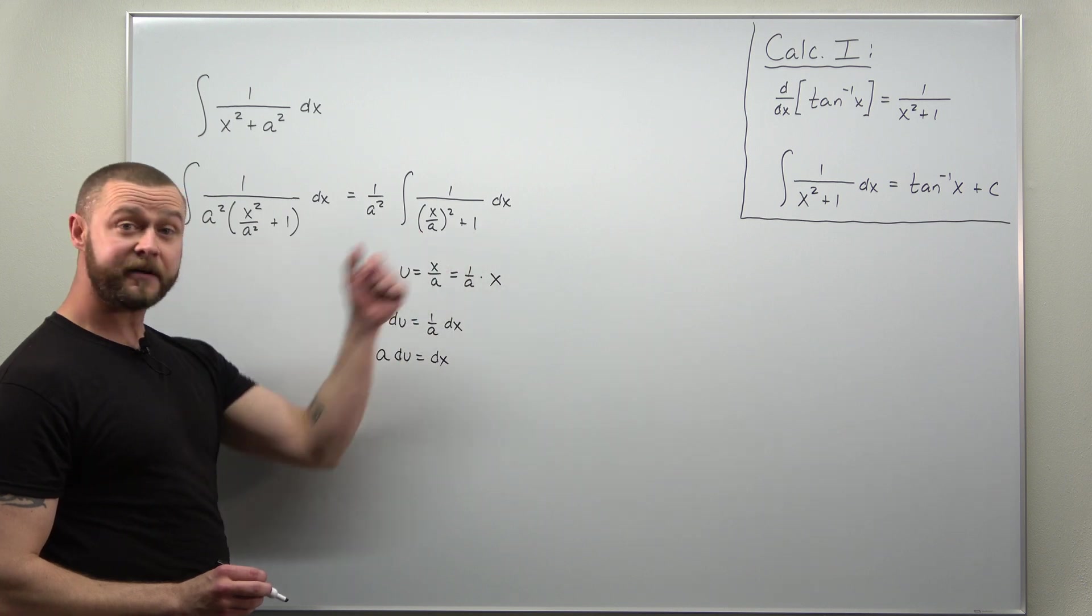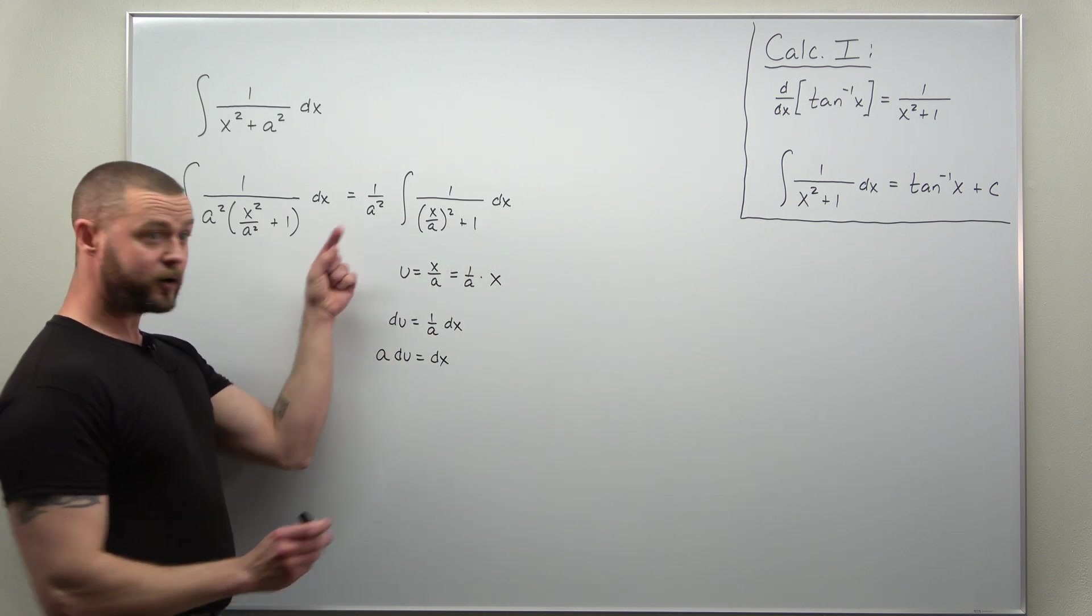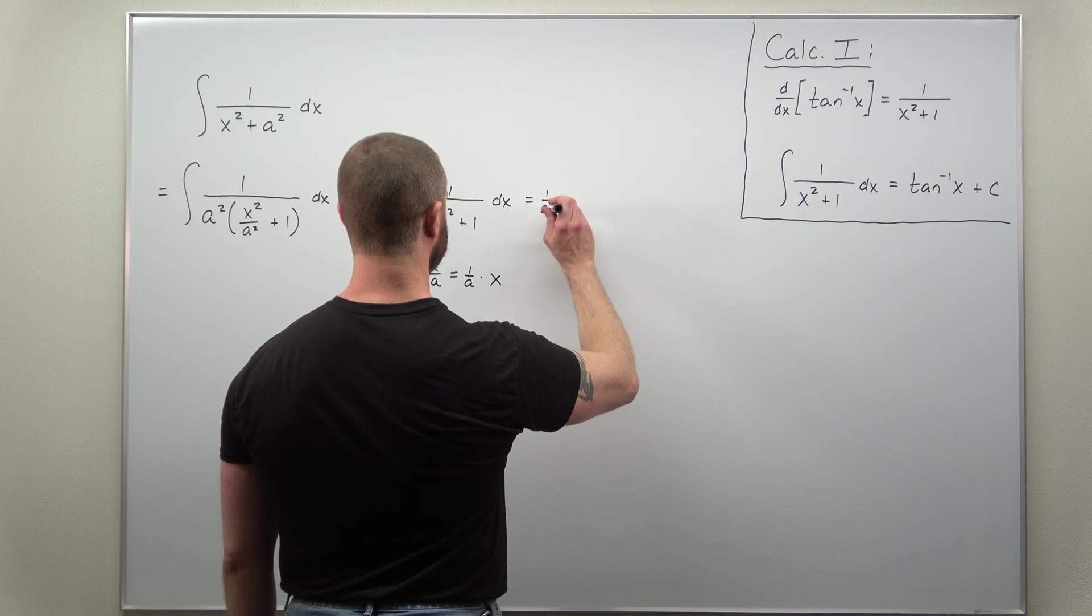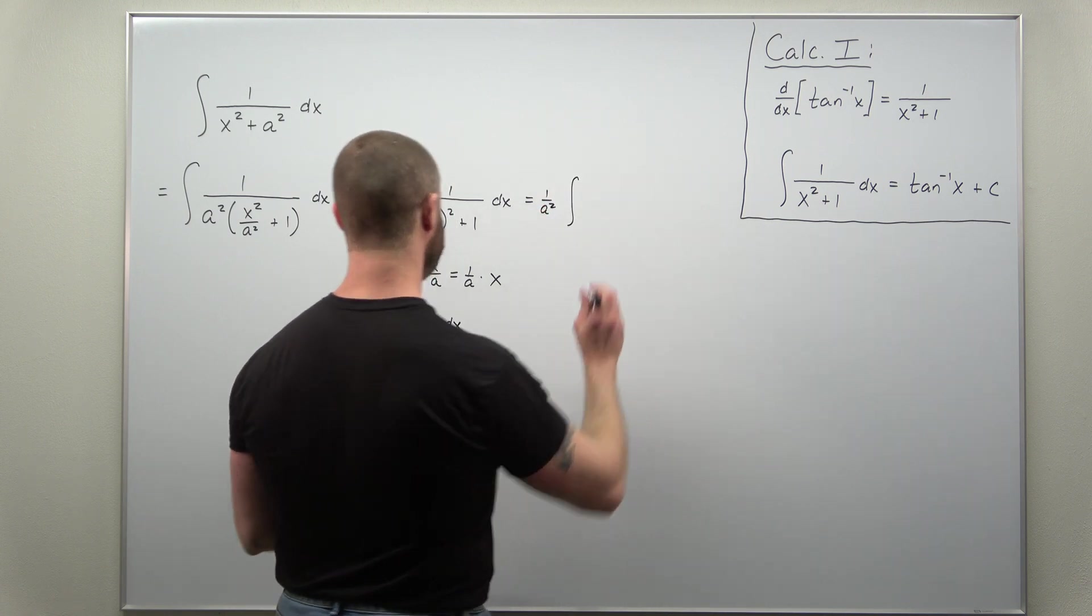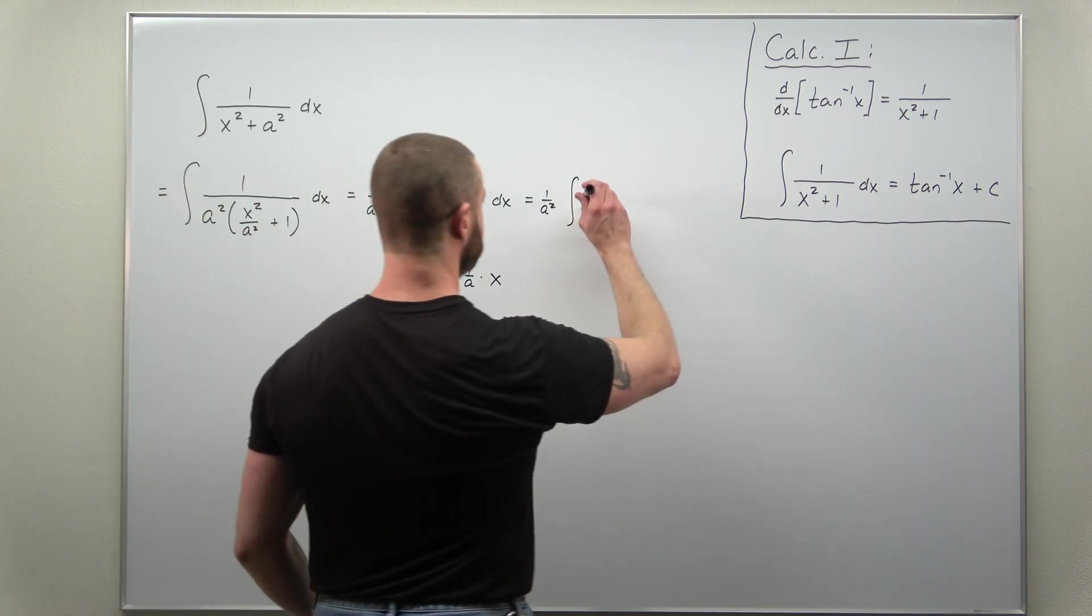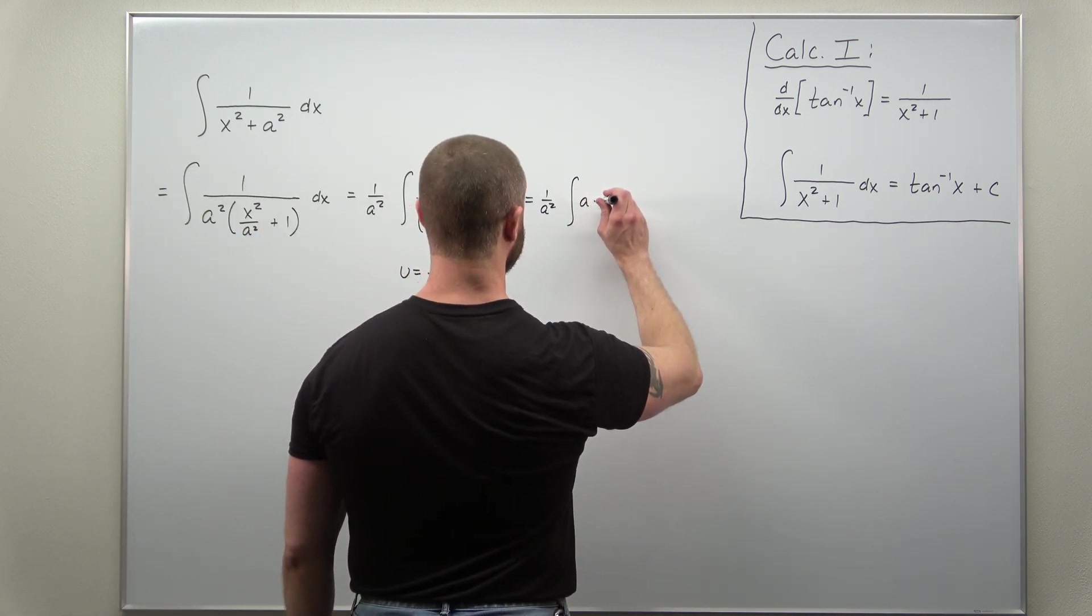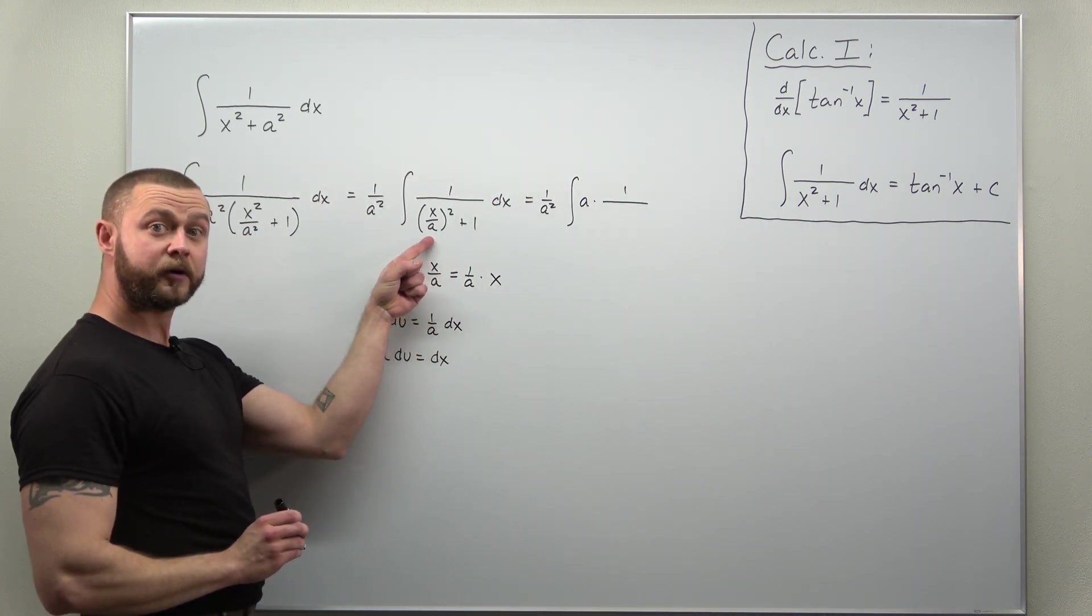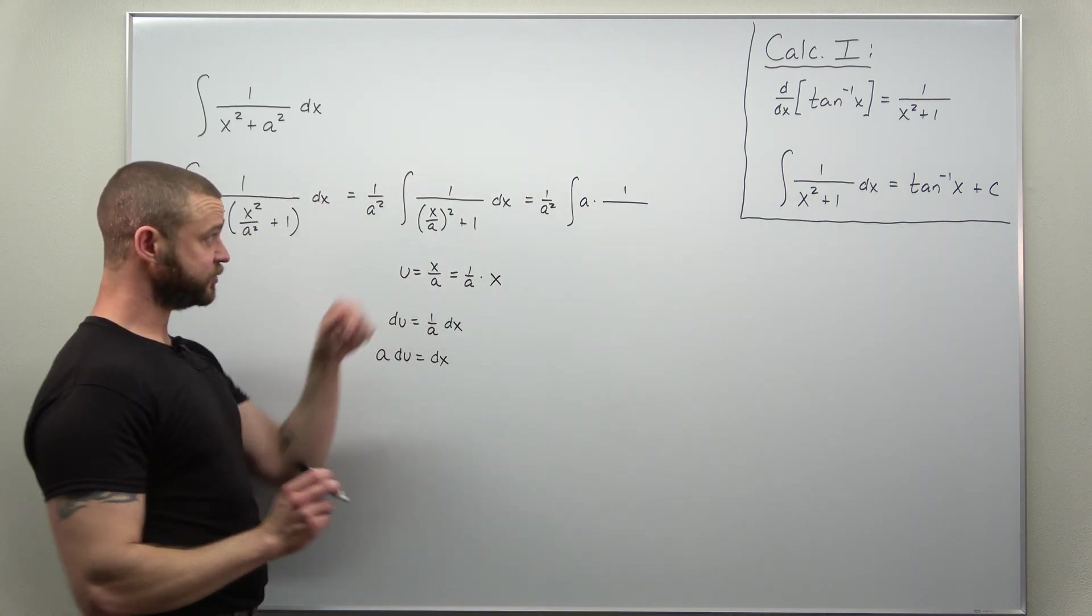That equals dx, and we should be able to convert everything. We have our 1 over a squared factor, and that's going to multiply the integral. Here we have a factor of a, and then times 1 over u squared plus 1 du.